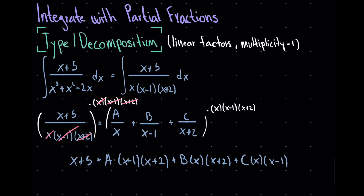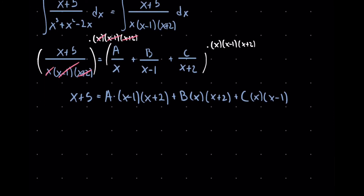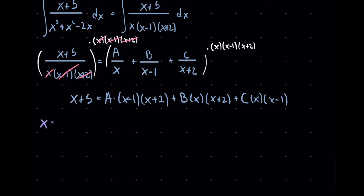Instead of expanding everything, there's a clever trick: this equation holds for all x, so we plug in values that make constants disappear. Plugging in x = 1 makes the A and C terms vanish (since x - 1 = 0), leaving only the B term. We get 1 + 5 = 6, equal to B·(1)·(3), so B = 6/3 = 2.